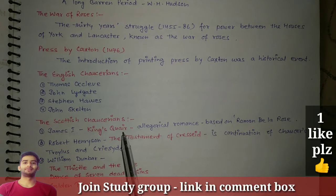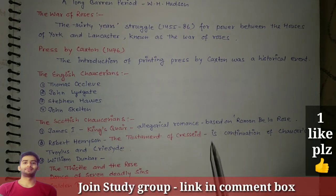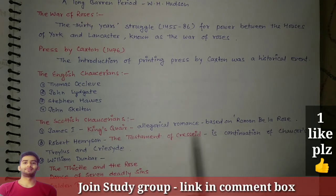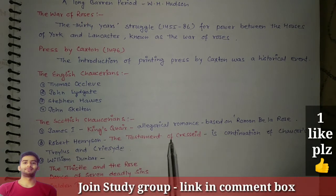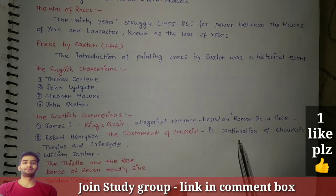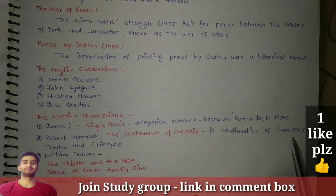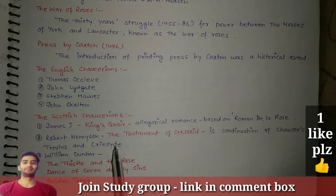Now let's talk about the Scottish Chaucerians, meaning they belong to Scotland. James I wrote King's Quair, and this work is an allegorical romance based on Roman de la Rose. Next is Robert Henryson — The Testament of Cresseid, which is a continuation of Chaucer's Troilus and Criseyde.